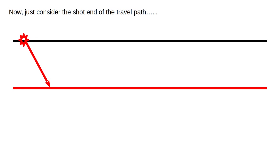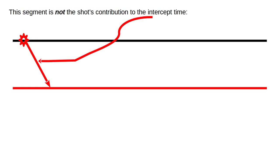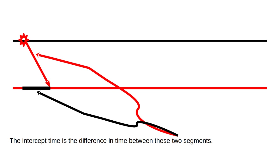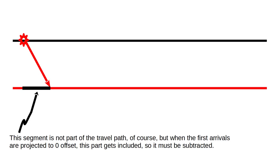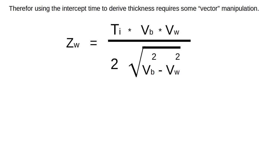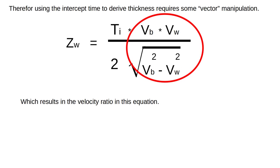Now just consider the shot end of the travel path. This segment is not the shot's contribution to the intercept time. The intercept time is the difference in time between two segments, because the intercept time is the time at offset distance zero, not at this offset. This segment is not part of the travel path, of course, but when the first arrivals are projected to zero offset, this part gets included, so it must be subtracted.